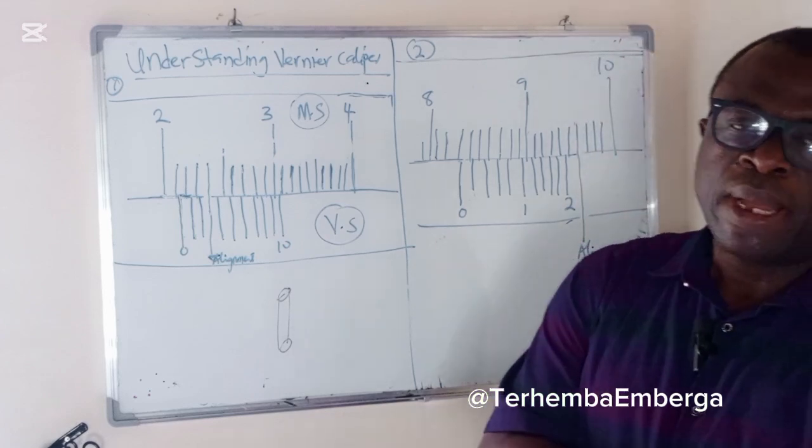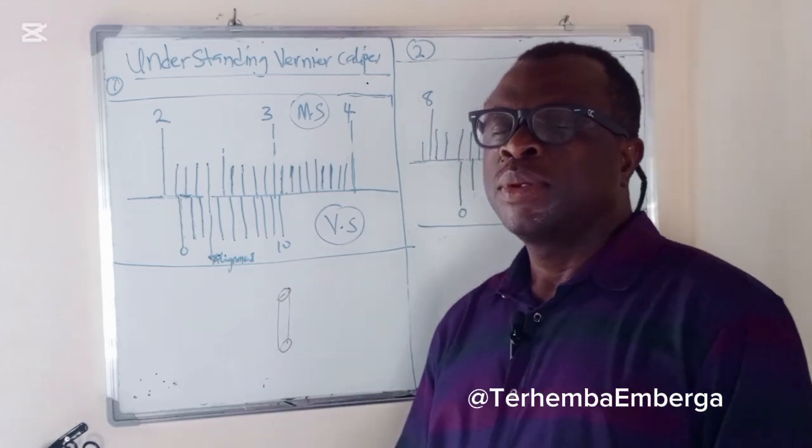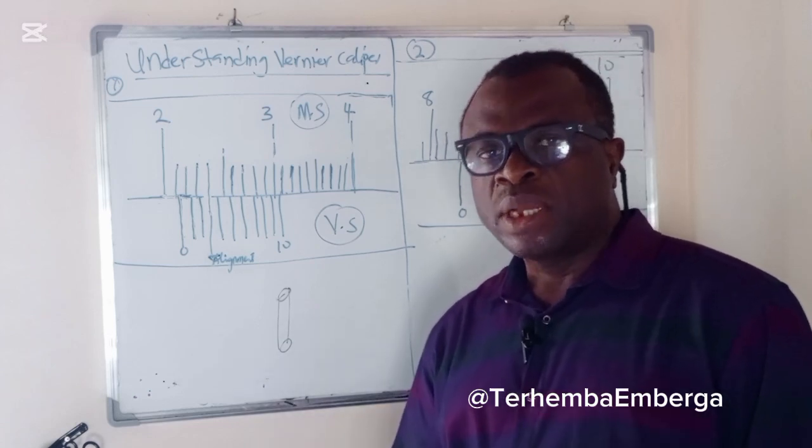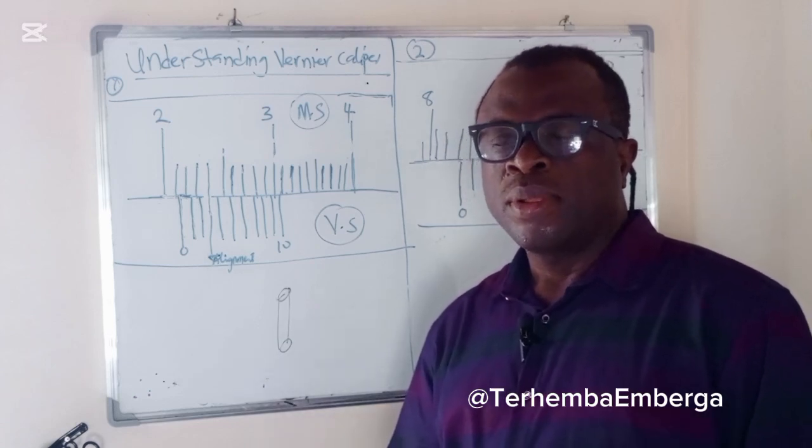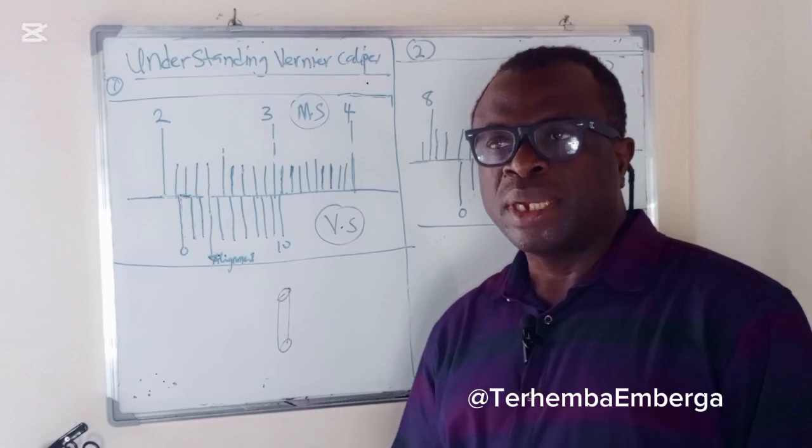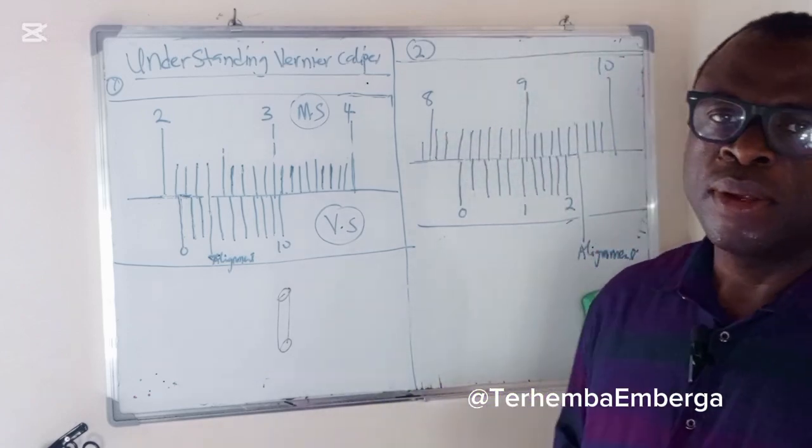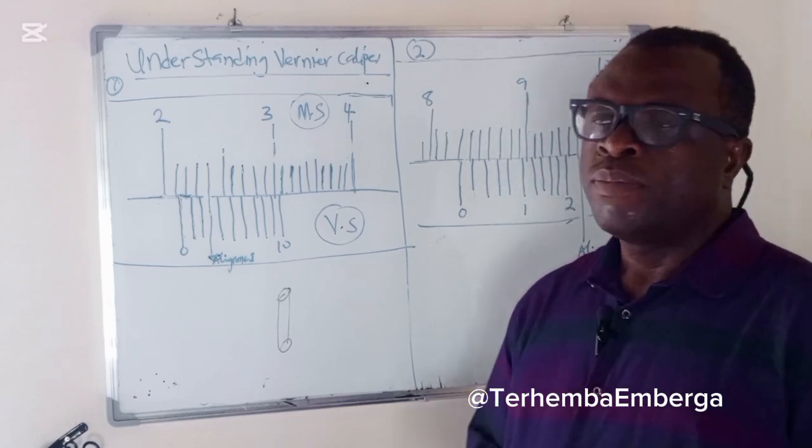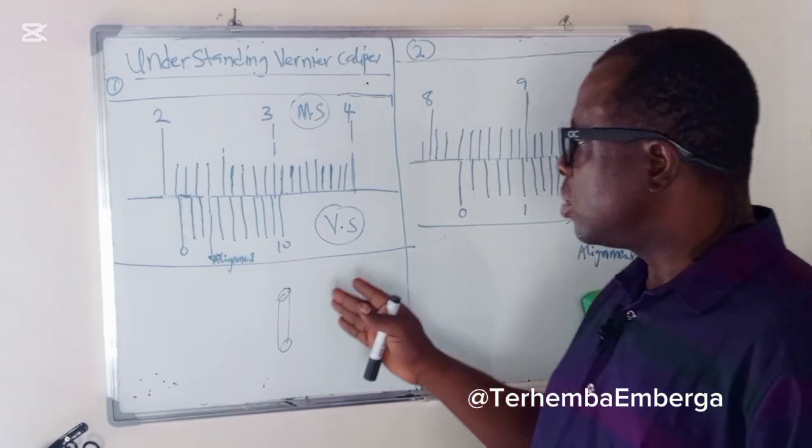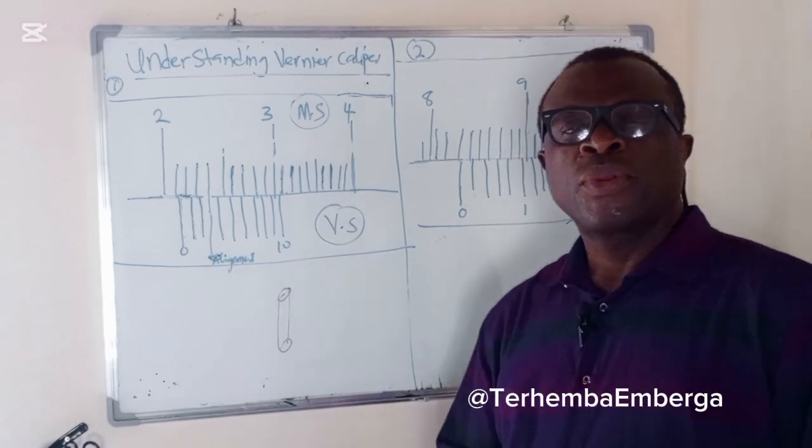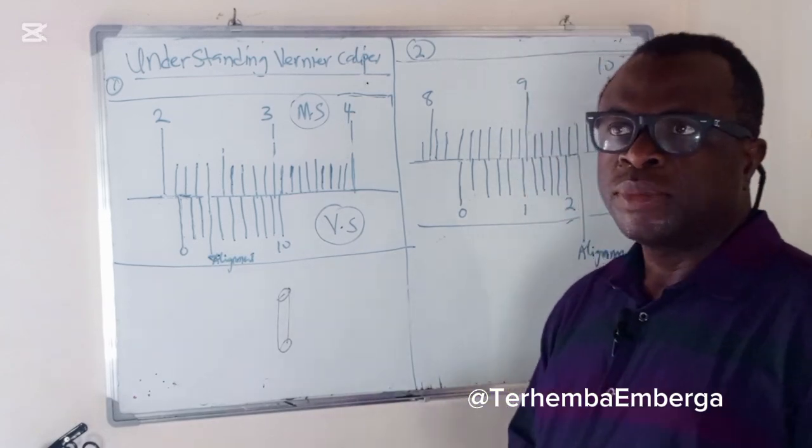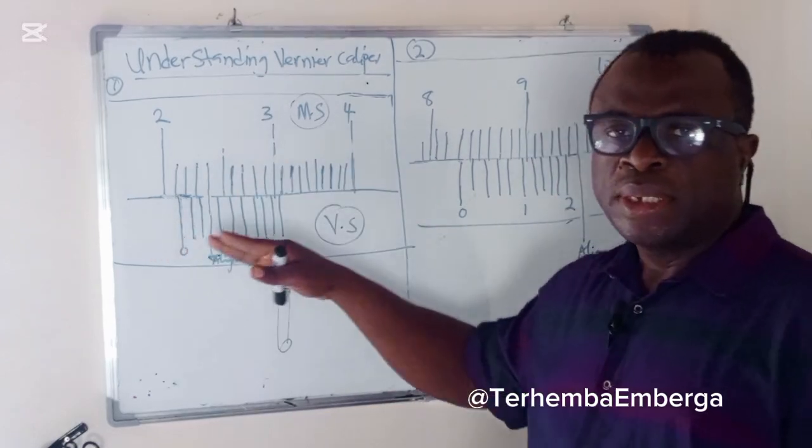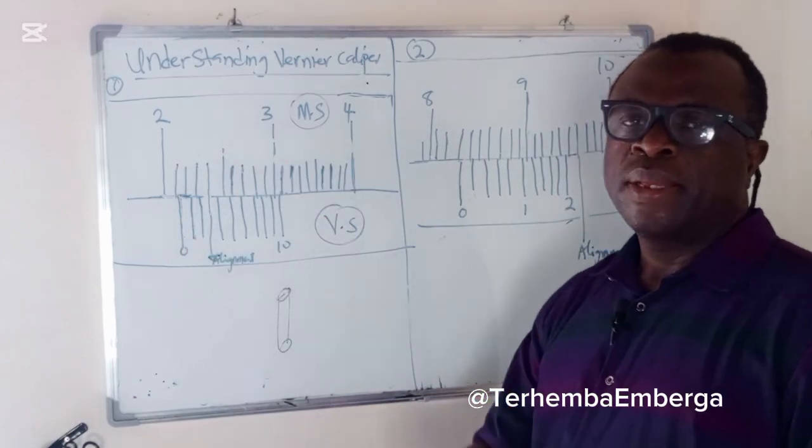Basically, vernier caliper has two scales: the main scale that is fixed on the caliper, and the secondary scale or what we call the vernier scale that is always sliding parallel to the main scale. But before you can read the vernier caliper, you have to really understand what is the main scale and what is the vernier scale.